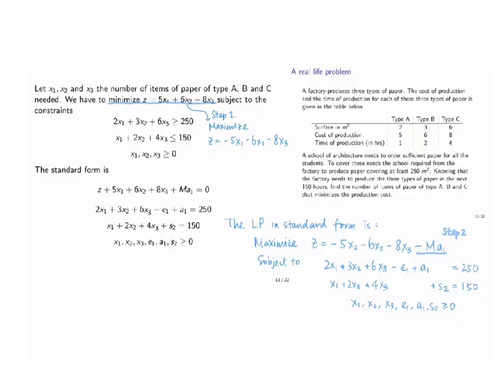the factory needs to complete the production within 150 hours. Thus, we have the following constraints and all the variables are non-negative.